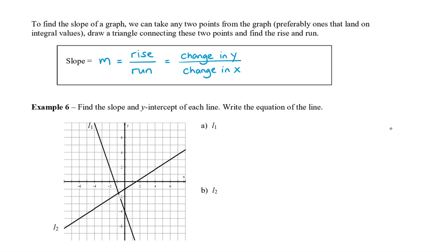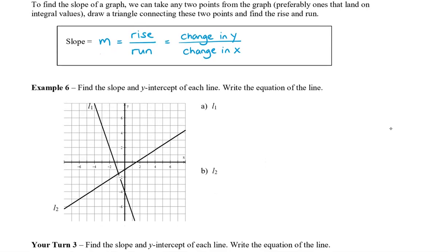Alright, so let's take a look. Find the slope and y-intercept of each of these lines and then write the equation. So given L1, which is my line going down here, we're going to pick two points from the line. Now there are a lot of integral points. We can pick these two over here. We can even pick that y-intercept here and then pick another point up here. So no matter which two points I choose, when I draw my triangle, I will notice that my rise is 3 and my run is 1.